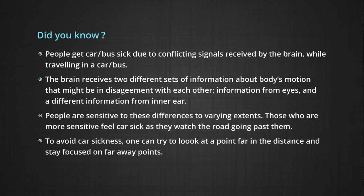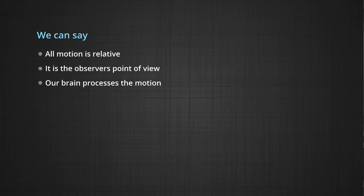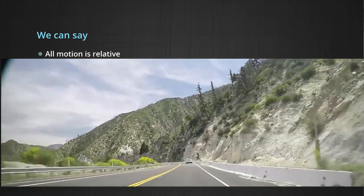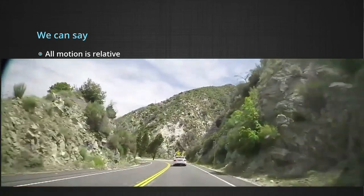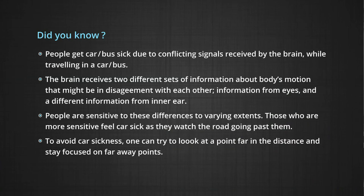Did you know that your brain is getting two different sets of information about your body's motion when you are moving in a car or a bus? Sometimes people get sick in the car or bus. Why is this happening? Because the brain is not connecting the motion of the bus as it goes around on the highway — this is more pronounced on a hilly road. People may be looking outside at the scenery while the car is going along winding roads, so the information from the eyes and the information from the brain are not matching. This becomes very difficult for some people and causes them to feel car sick. What they should do is basically look at a point far away at a distance and focus on that, so that this relative motion does not cause them to feel sick.